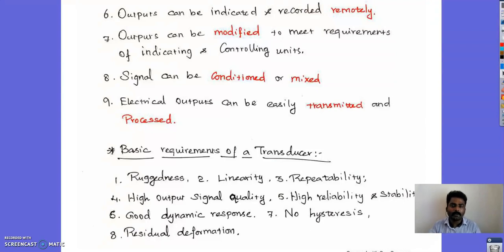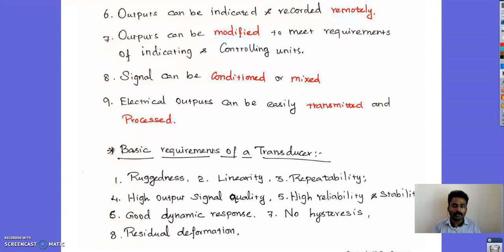The basic requirements of a transducer are: ruggedness — it must be able to withstand overload conditions and other external factors. Linearity — the output and input characteristics will be linear, so as one quantity increases the other also increases. Repeatability — however many times the same input is given, it obtains the same output. High output signal quality — the output signal quality should be very high. High reliability and stability.